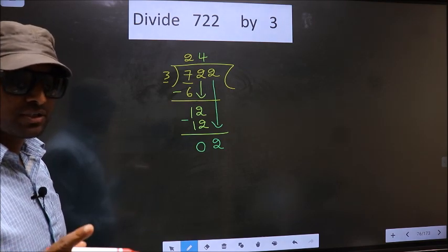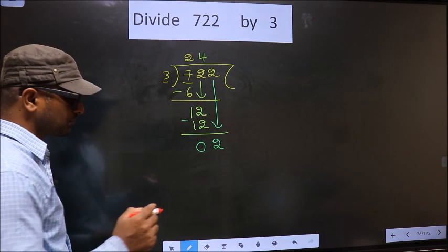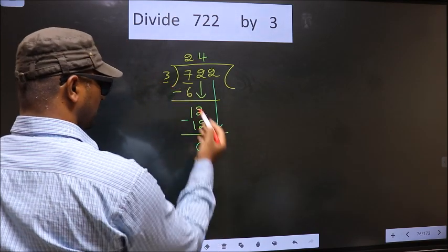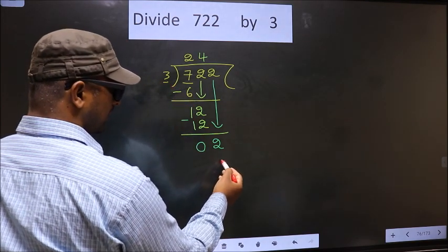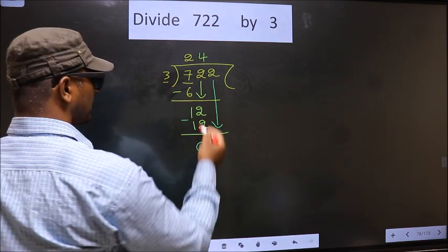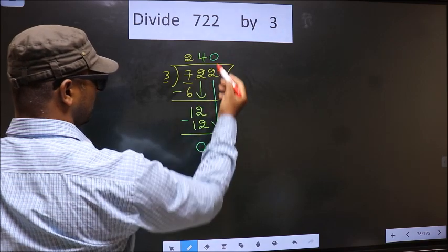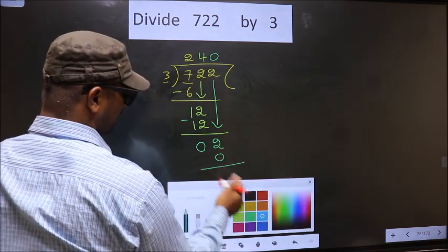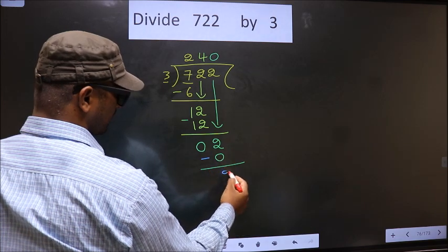Instead what you should think of is, what number should we write here. If we write 3 here, that is larger than 2. So what we do is, we take 0 here. So 3 into 0, 0. Now you subtract. 2 minus 0, 2.